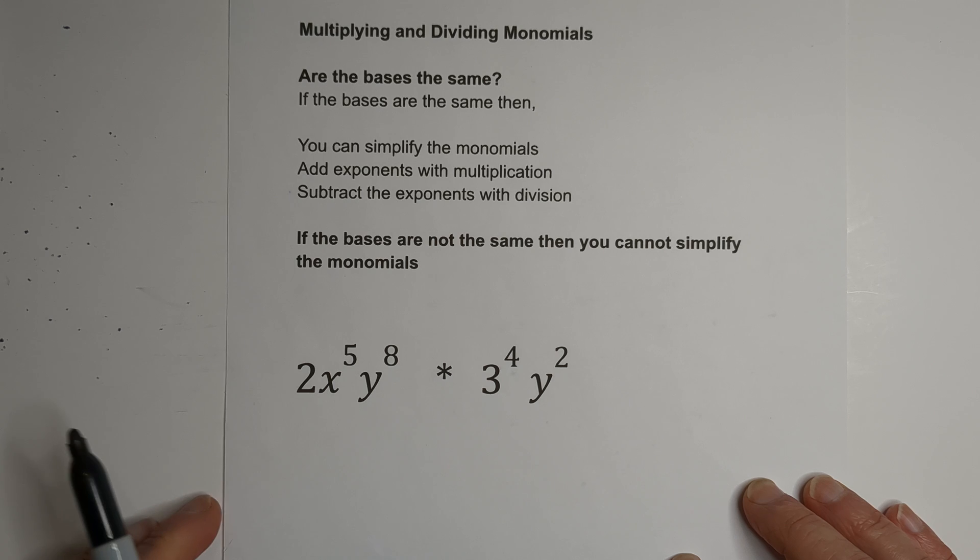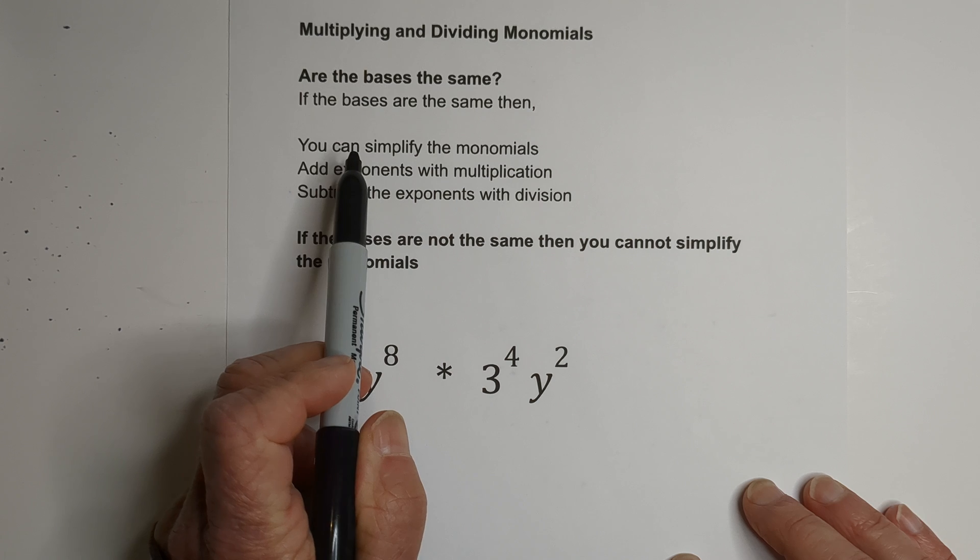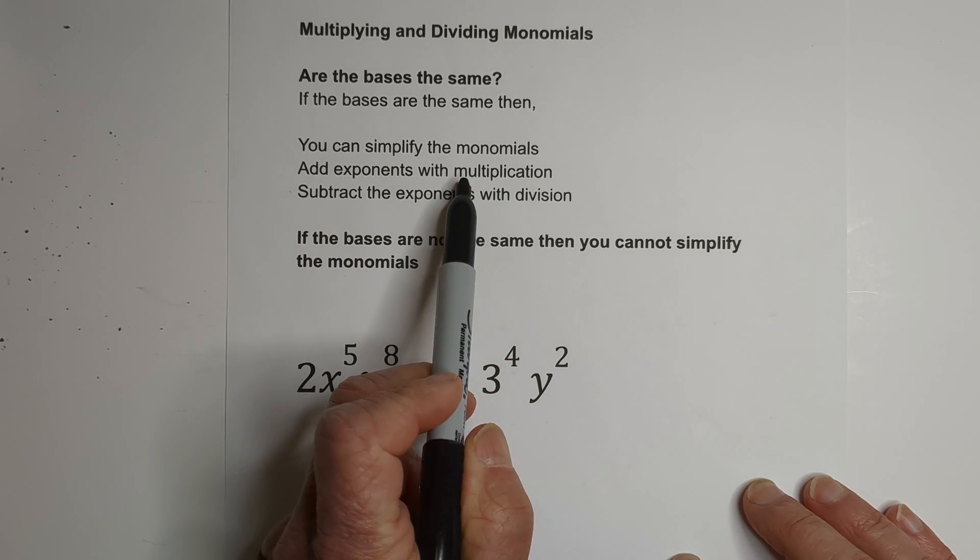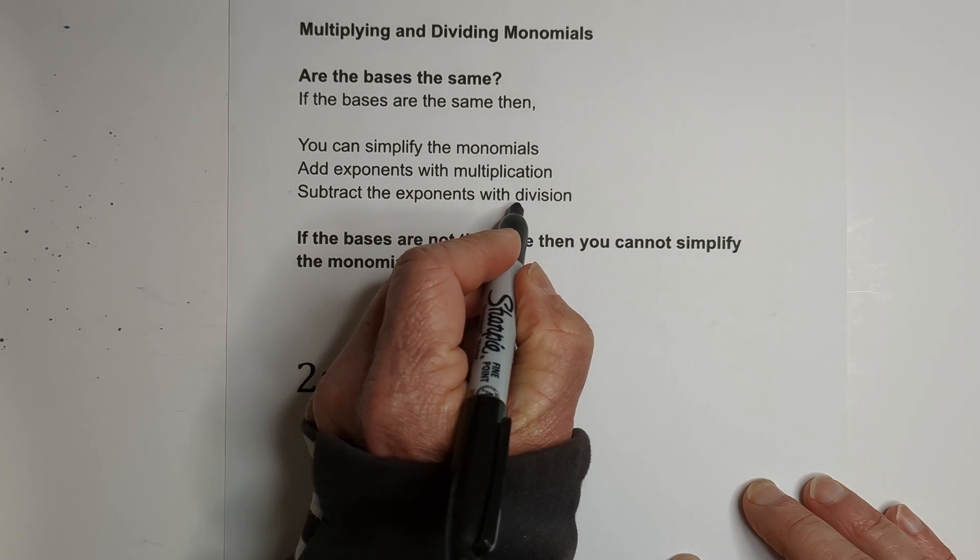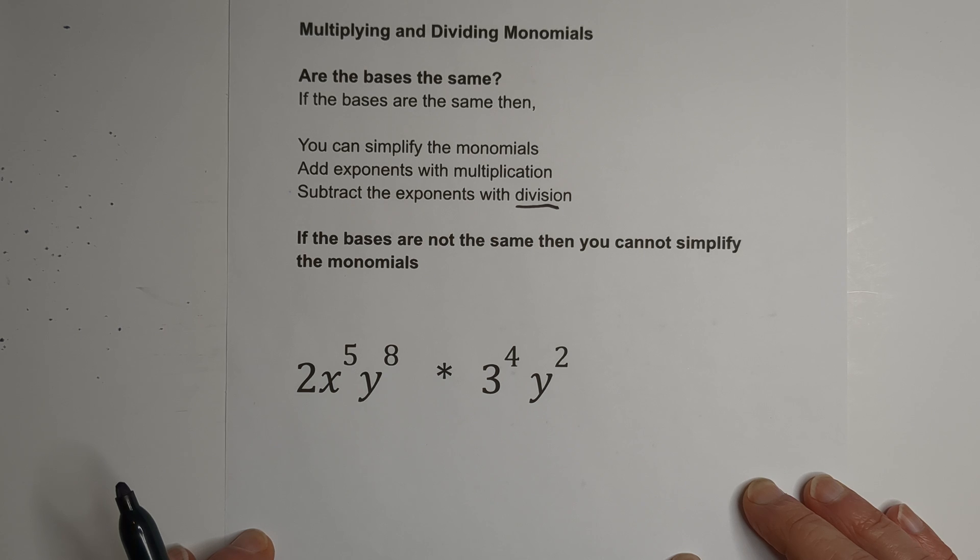So this is a monomial. First thing you ask, are the bases the same? If they're the same, you can simplify and you can multiply and divide. Remember, you add exponents with multiplication, subtract with division. If the bases are not the same, you can't simplify.